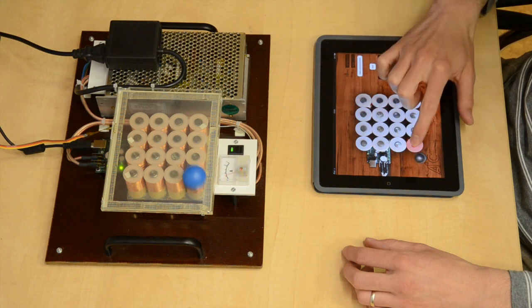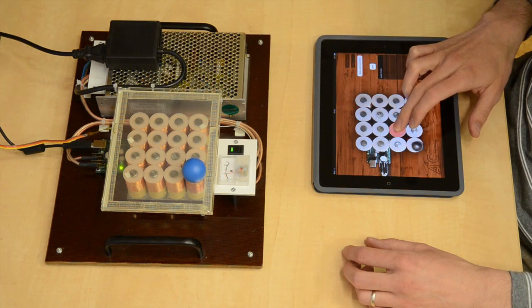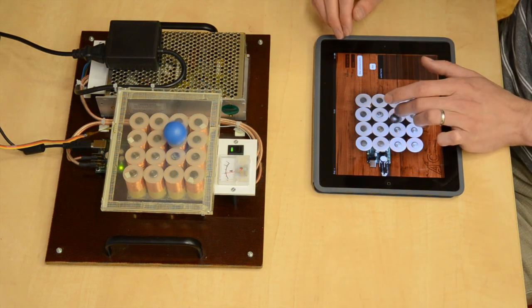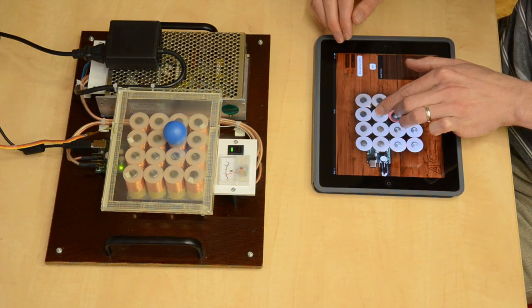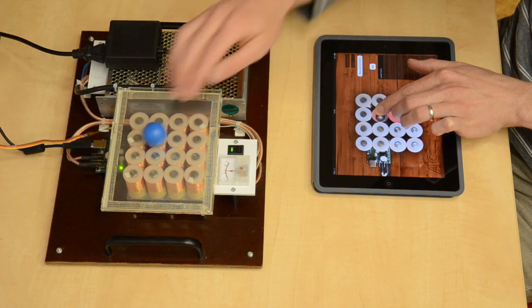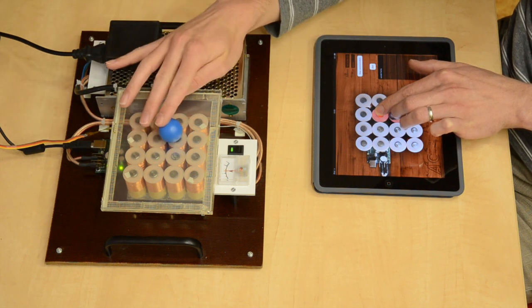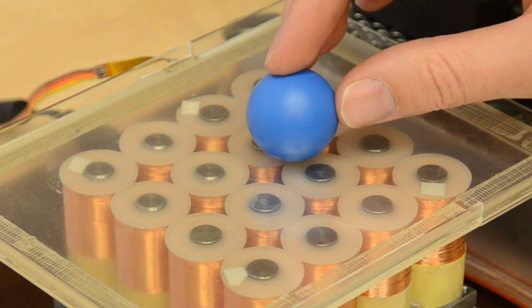If you activate any coil it will attract the iron ball. As you can see it takes long time before the ball settles and also it's easy to shoot the ball away. Moreover, it's not possible to stabilize the ball between coils just by activating several coils. There is no stable equilibrium in between.